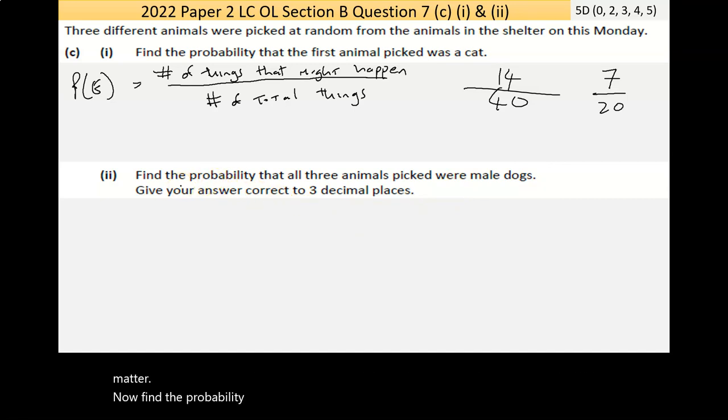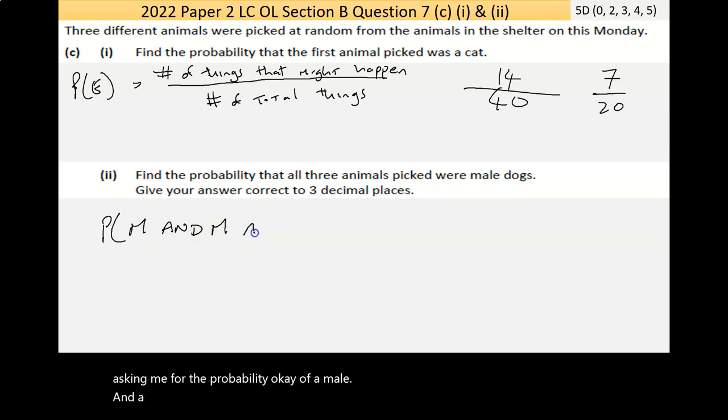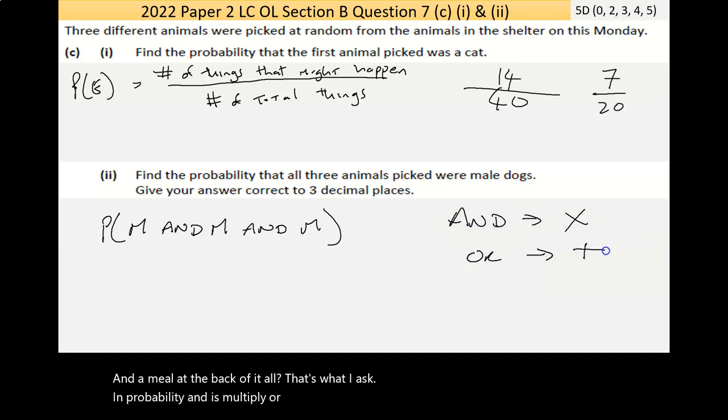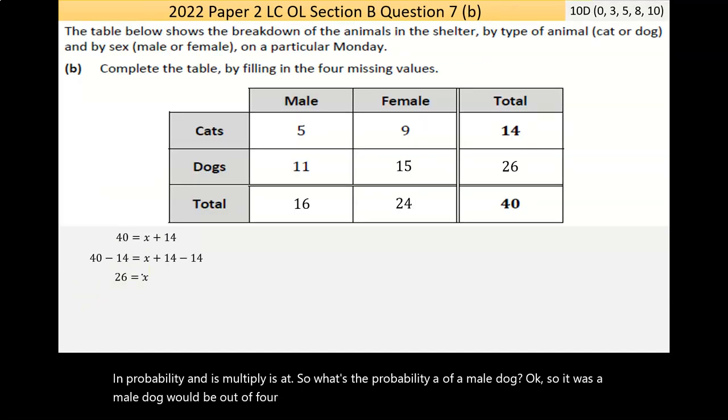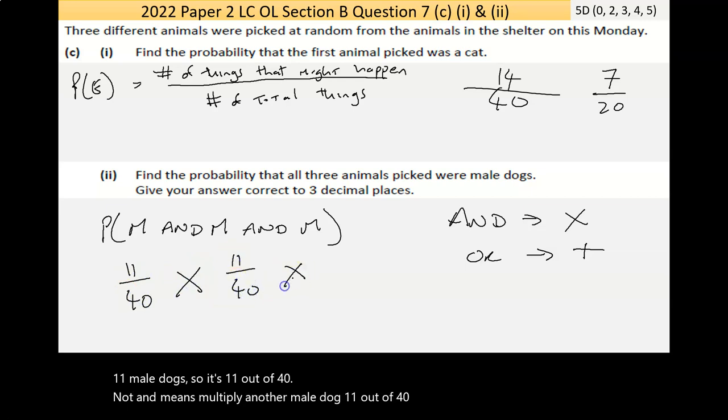I could go decimal there if I wanted to just convert 7 over 20 to a decimal. It doesn't matter. Now, find the probability that all three animals picked were male dogs. So in essence, that's asking me for the probability of a male and a male and a male. At the back of it all, that's what's asking. Now, in probability, and is multiply. Or is add. So what's the probability of a male dog? So it was a male dog would be, out of 40, there are 11 male dogs. So it's 11 out of 40.